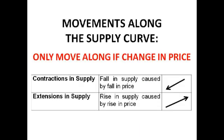Now we're going to look at movements along the supply curve. Remember, we only move along curves if there is a change in price. If there is a fall in price, there's a fall in supply because fewer firms can afford to produce, so they have to cut supply, which causes a contraction of the supply curve — a movement along the curve downwards. But if there is a rise in price, more producers enter the market, so supply increases, which causes an extension in supply — moving upwards along the supply curve.